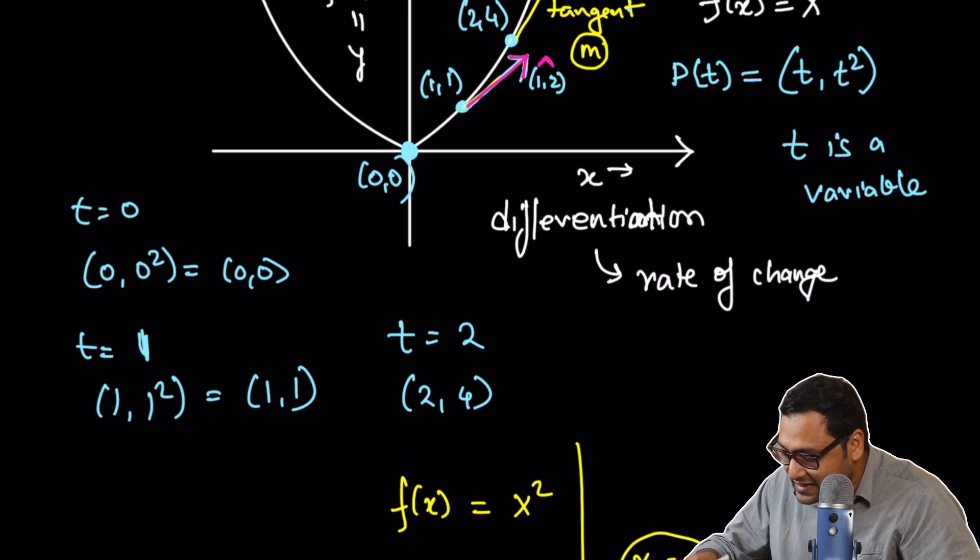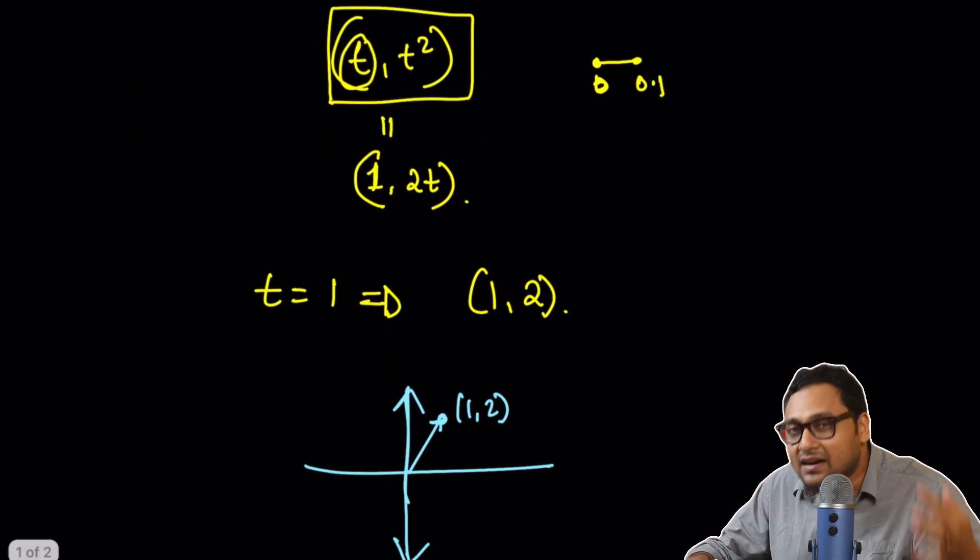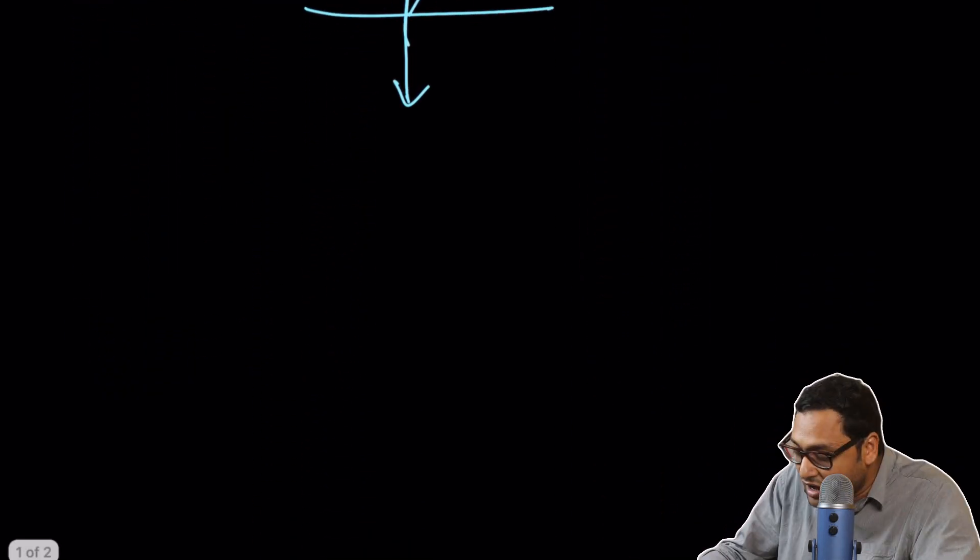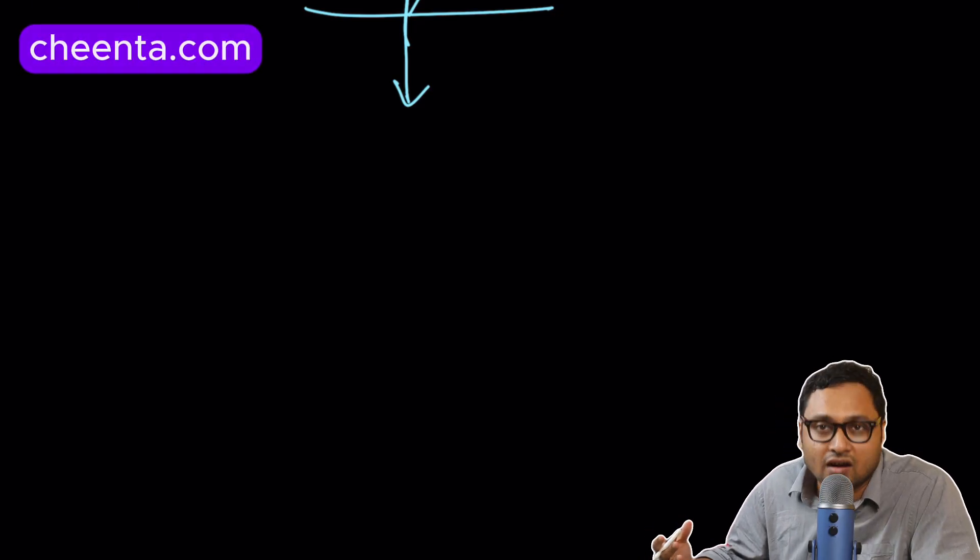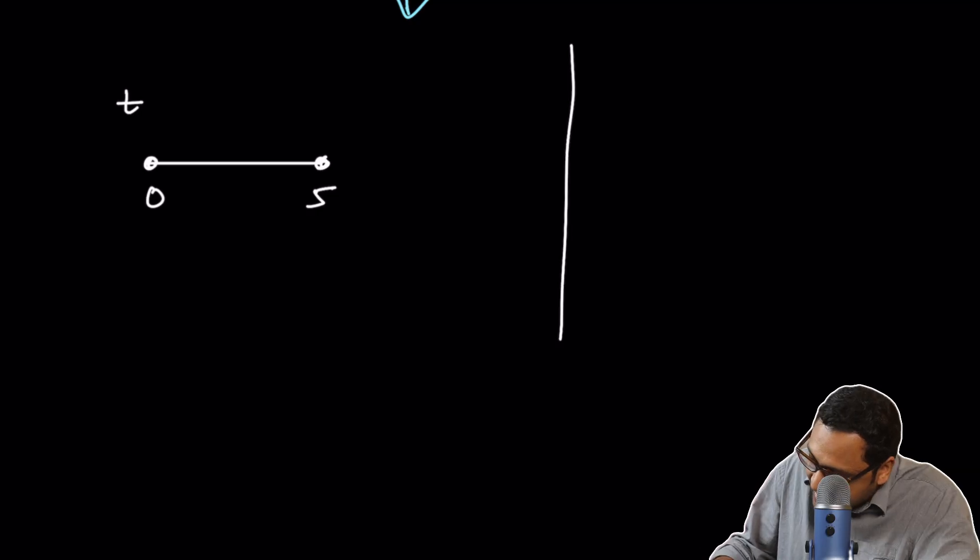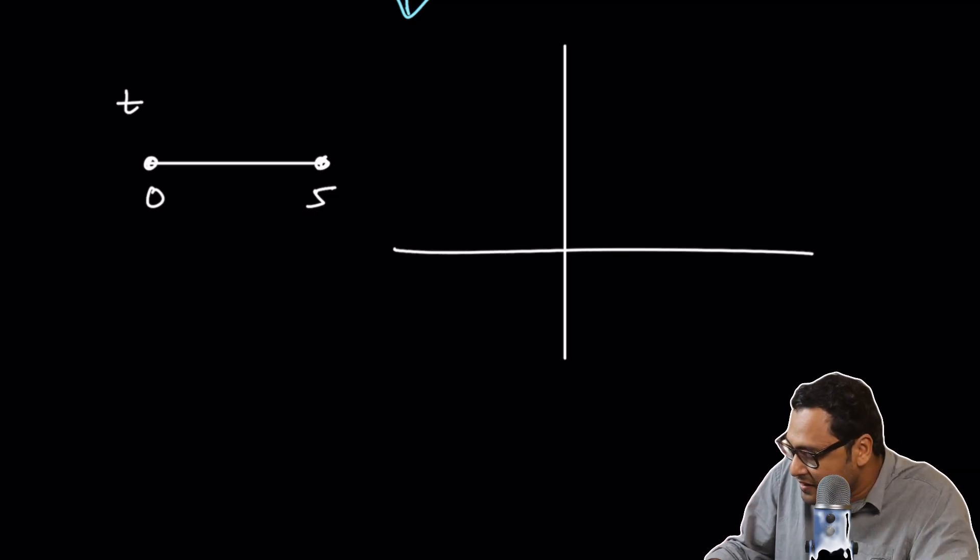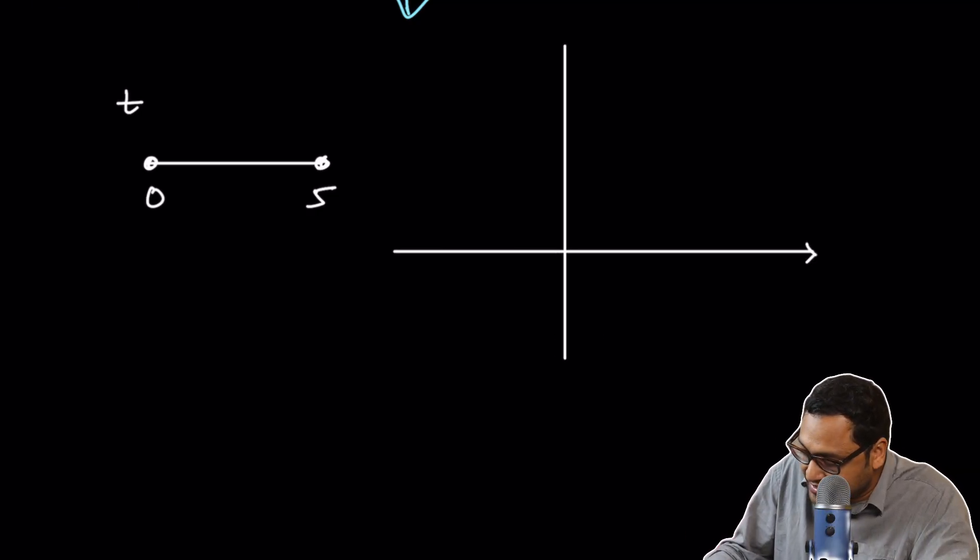Alright. So, let's suppose we understand, at least partly understand what's going on. Now, how do we use this fact to calculate the length of a curve? It's actually pretty simple. What we do is we take 0 to 5, let's say. This is t and this is the R² or x, y coordinate plane.